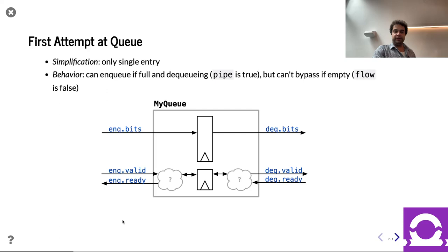Within the queue, the outside sees the decoupled interfaces for enqueue and dequeue. When ready and valid are both true, it fires going in. Same for dequeuing — if ready and valid are both true, it fires. So to get started, we can see our simple datapath: some register for the actual bits, perhaps a register to track internal state, and then we're going to need to figure out some logic for those two question mark bubbles.